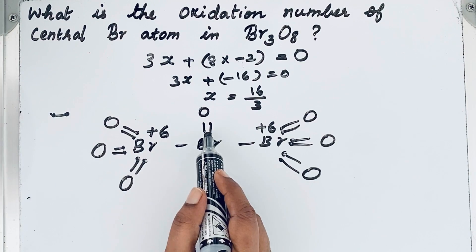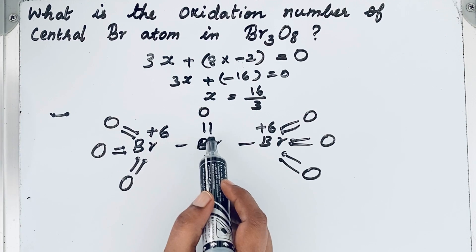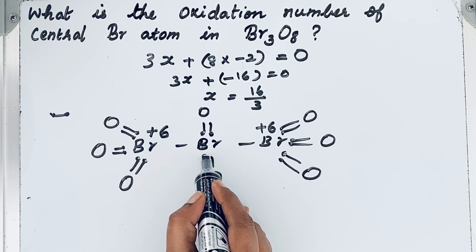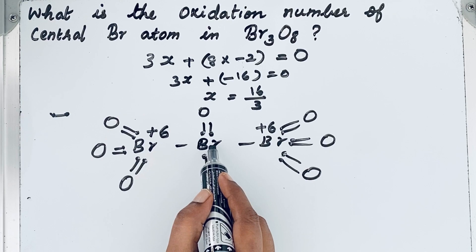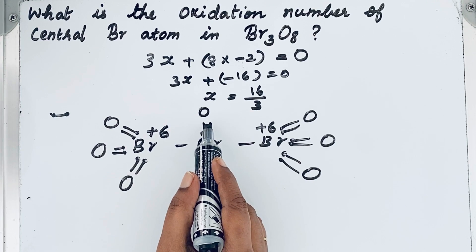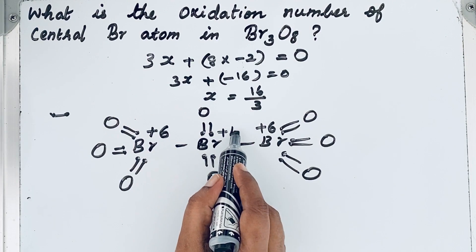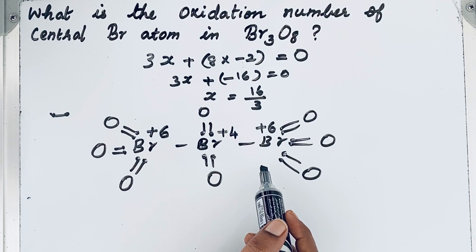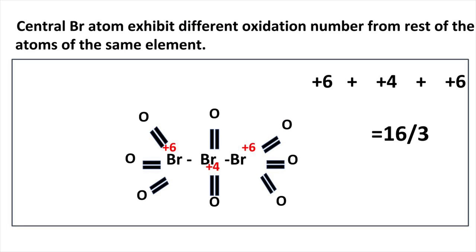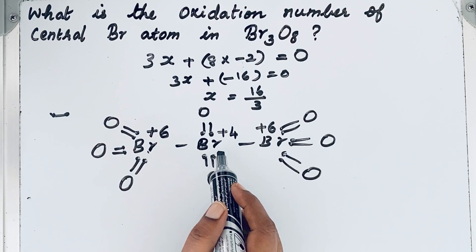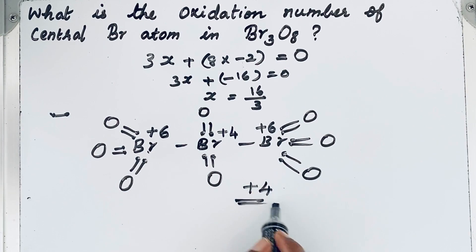Now for the central bromine atom: it is attached to only two oxygen atoms, so it has four electrons involved in those bonds — one, two, three, four. Bromine lost four electrons, so its oxidation number is +4. This is why the average gives a fractional value — different bromine atoms have different oxidation numbers. The oxidation number of the central bromine atom is +4. Thanks for watching.